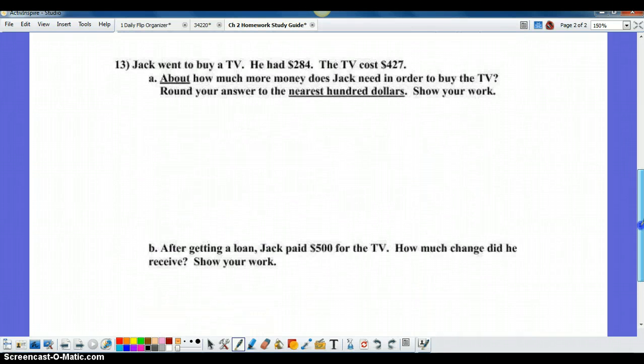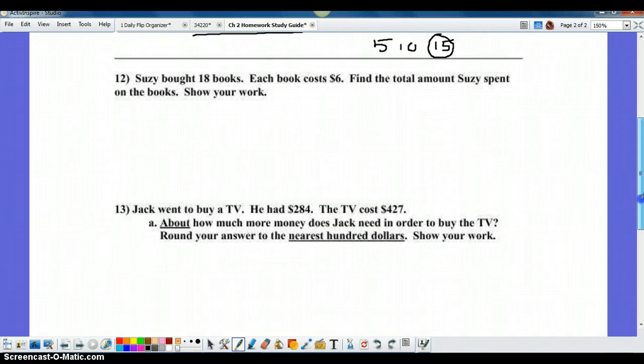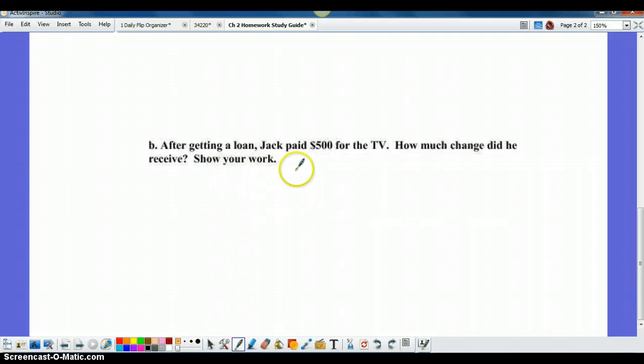A couple of word problems to wrap up our homework tonight. Thanks again for stopping by. Suzy bought 18 books. Each book cost $6. Find the total amount Suzy spent on the books and show your work. Again, you'd have to figure out the exact cost there because they want the total. Jack went to buy a TV. He had $284 and the TV cost $427. About how much more money does Jack need to order the TV? Round your answer to the nearest hundred. So in this case, you need to estimate to figure out how much he would need. And finally, after getting a loan, Jack paid $500 for the TV. How much change did he receive? Show your work. So if you're talking about change, you're probably going to subtract.